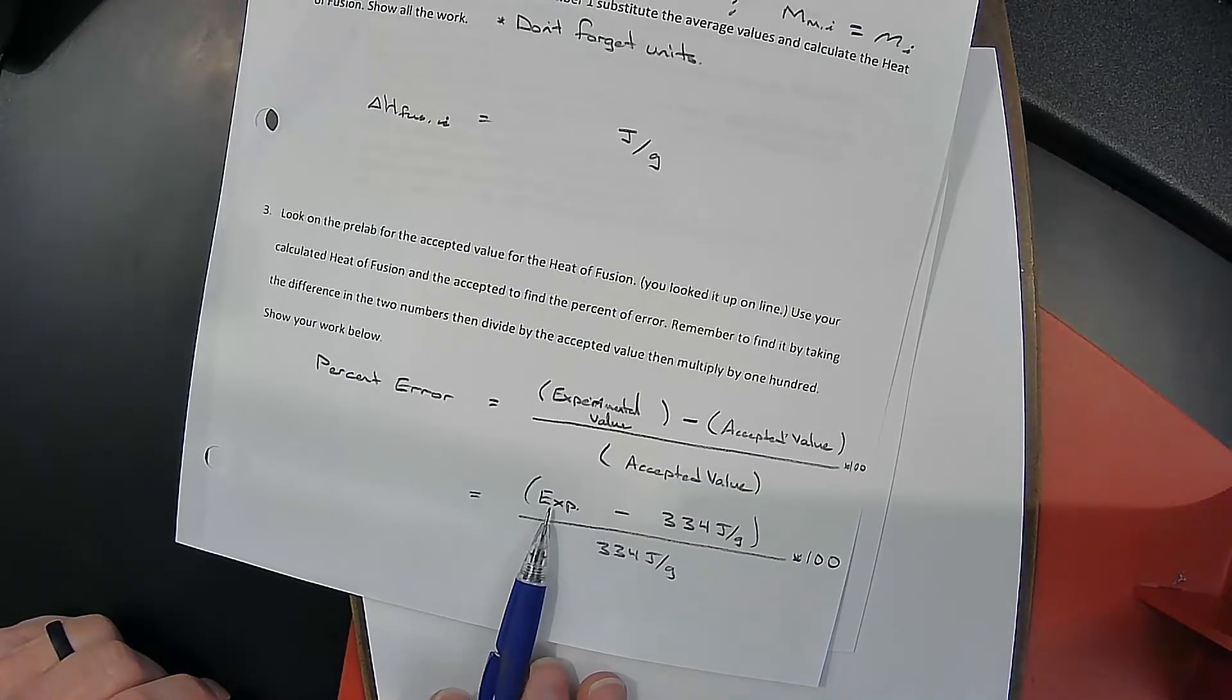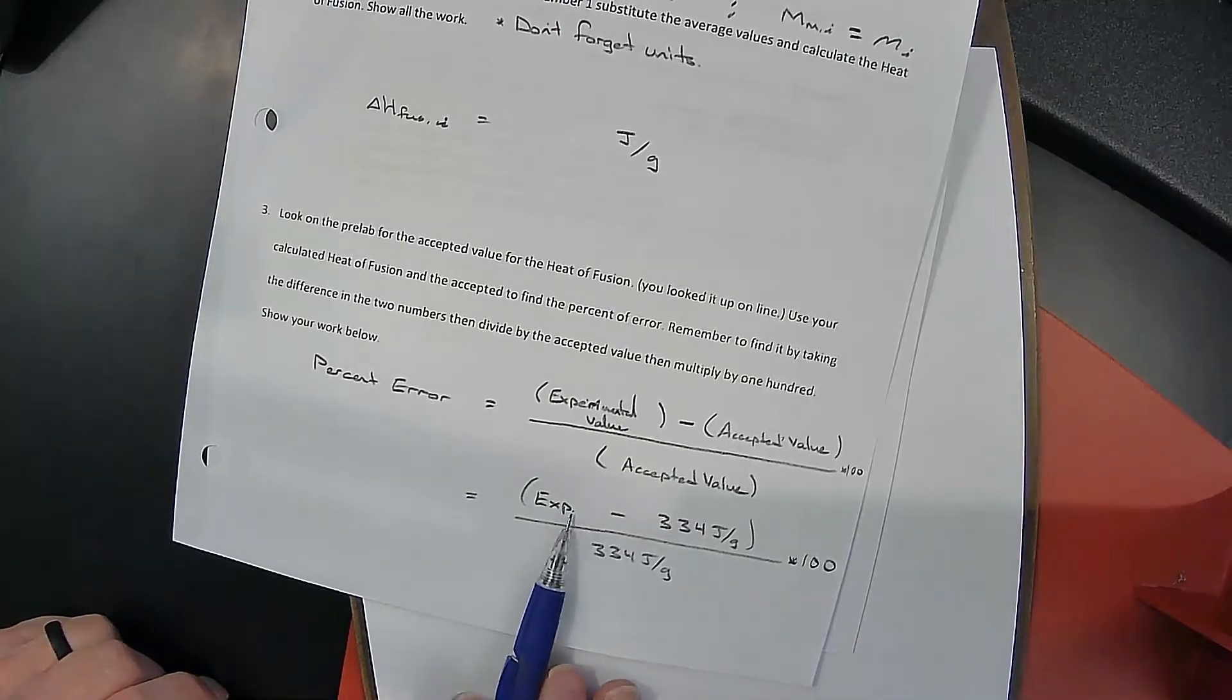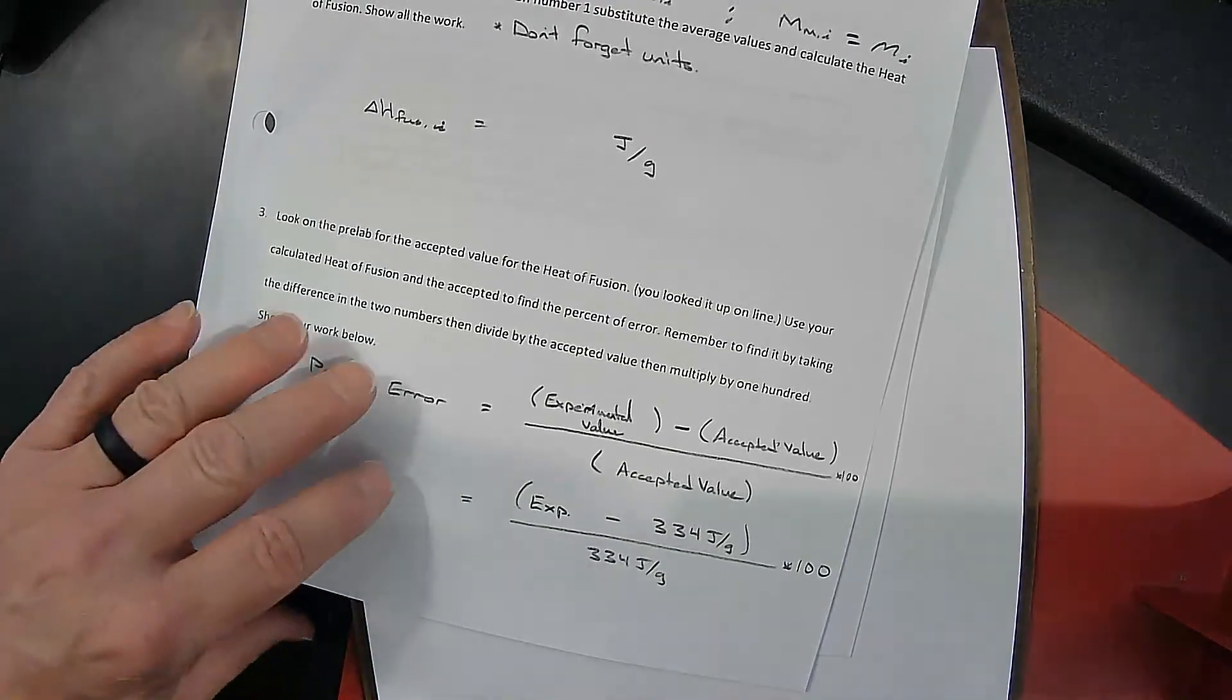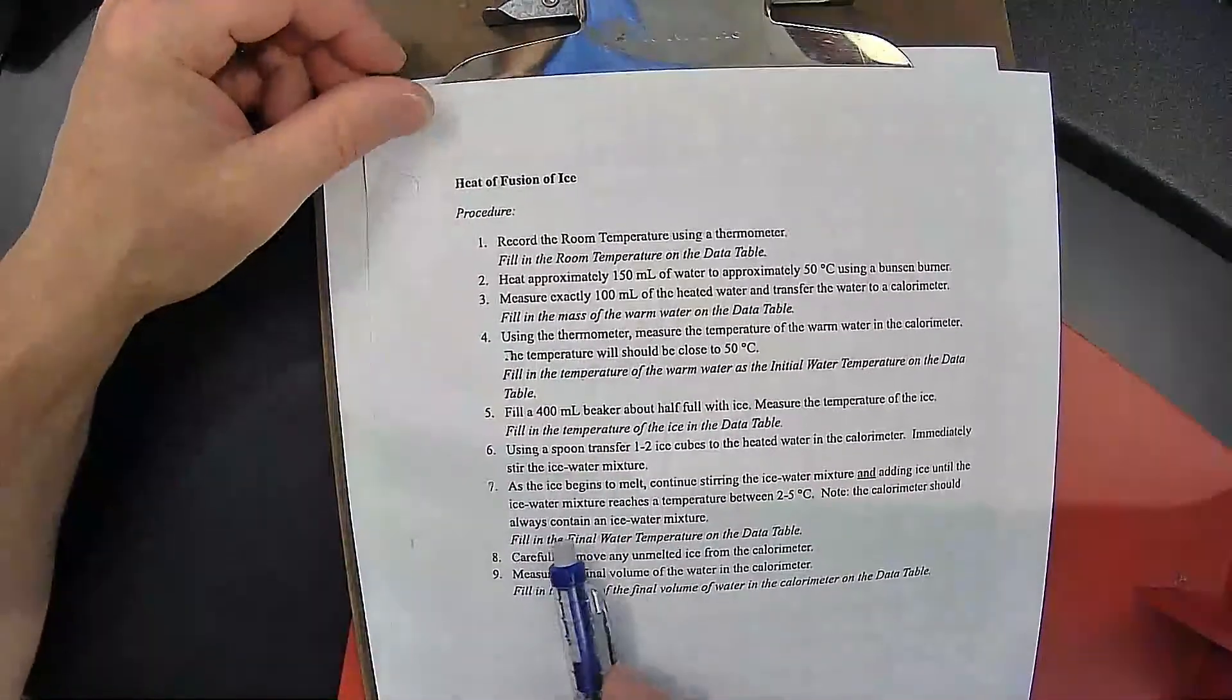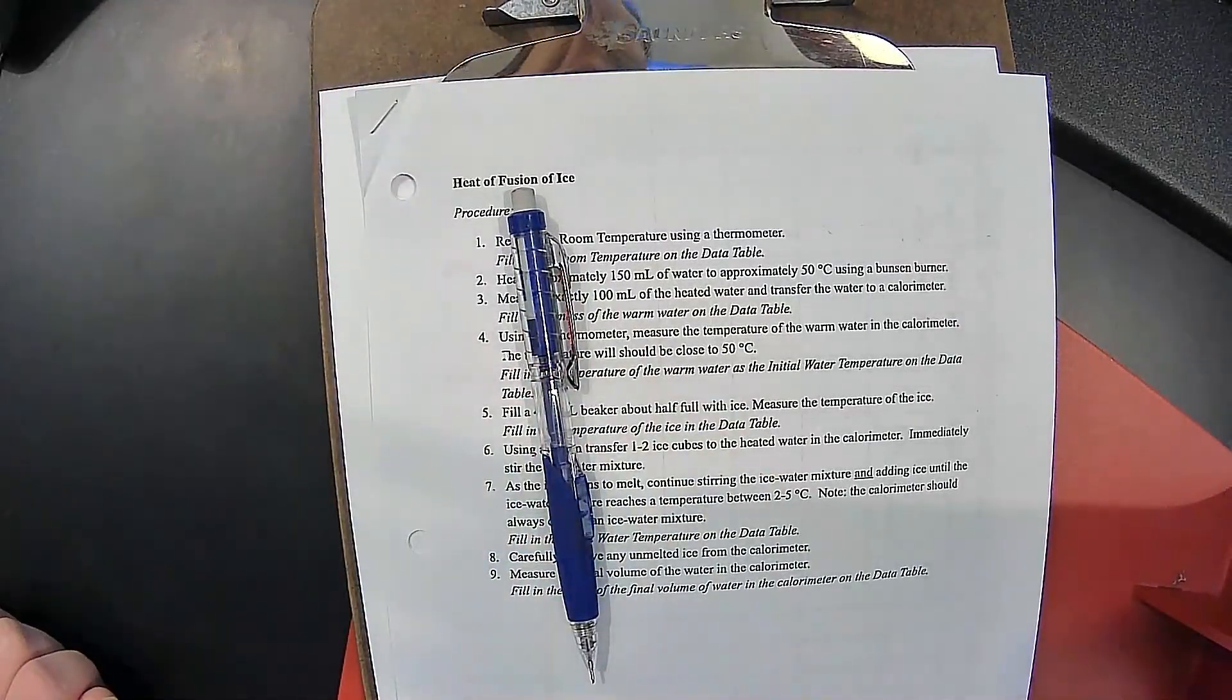If this is larger, you're going to end up with a positive value. If this is lower, it's going to end up with a negative value. But plus or minus 10% error is what we're looking for. I hope this helps in understanding the heat of fusion of ice.